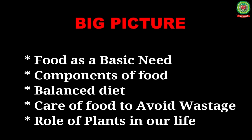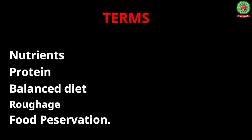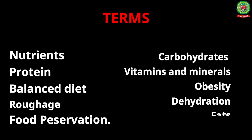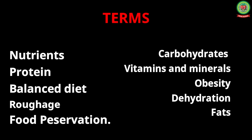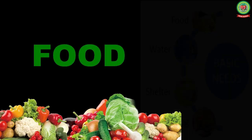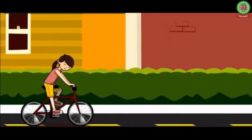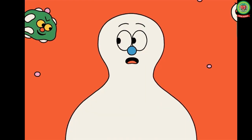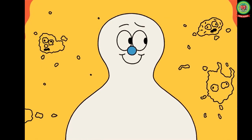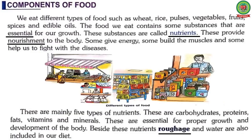We will also study care of food to avoid wastage and the role of plants in our life. The key terms in this chapter are: nutrients, protein, balanced diet, roughage, food preservation, carbohydrates, vitamins and minerals, obesity, dehydration, and fats. As we know, food is the basic need for every living organism — all living beings need food to survive. Food gives us energy to do work, makes us healthy, and protects us from various kinds of diseases.